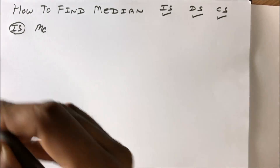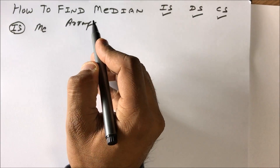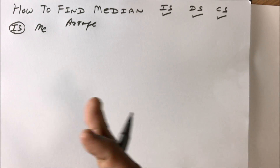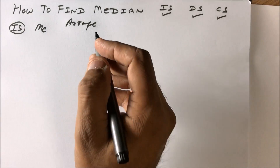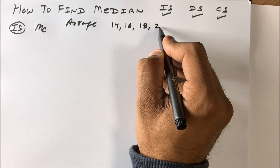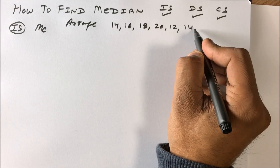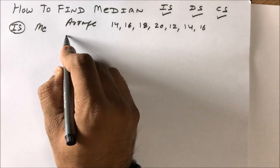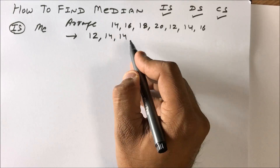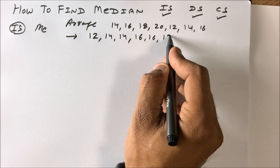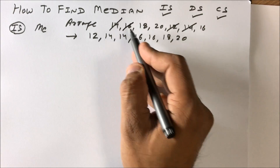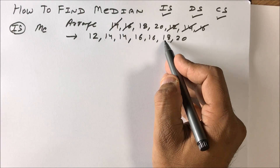In individual series, to find median, first we have to arrange the data either in increasing or decreasing order — preferably in increasing order. For example, we have 14, 16, 18, 20, 12, 14, 16. We arrange it from lowest to highest: 12, 14, 14, 16, 16, 18, 20.